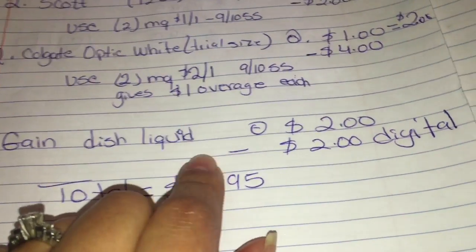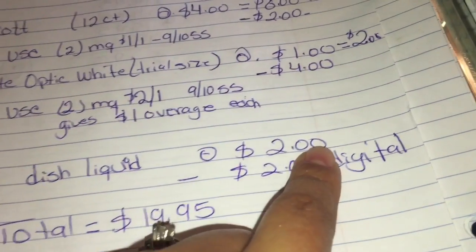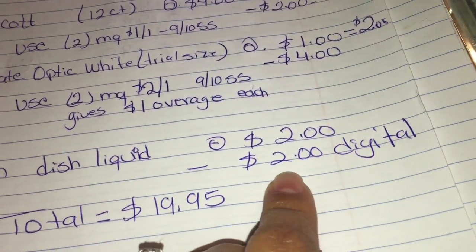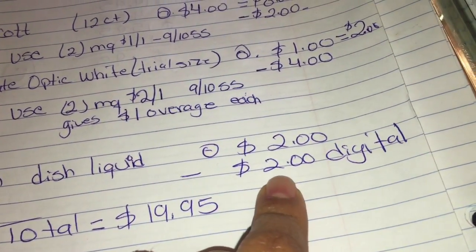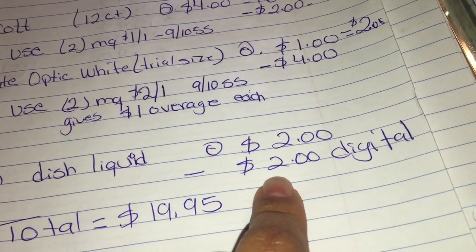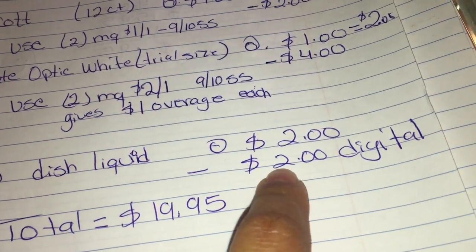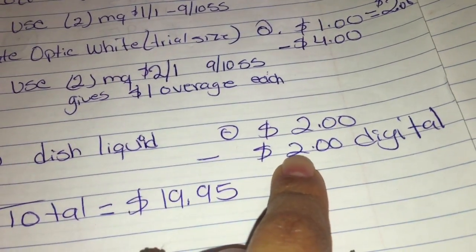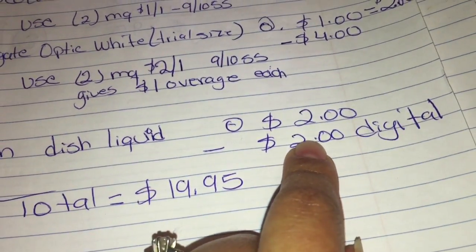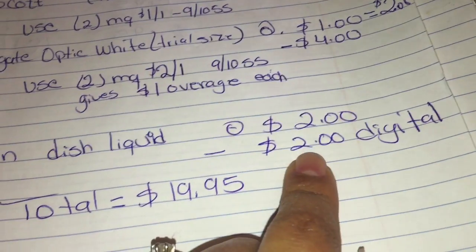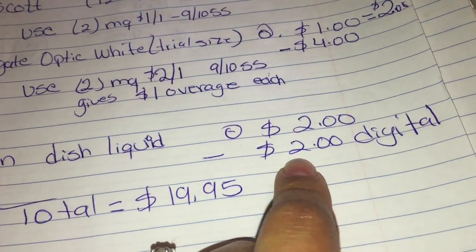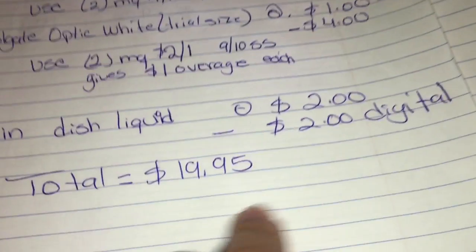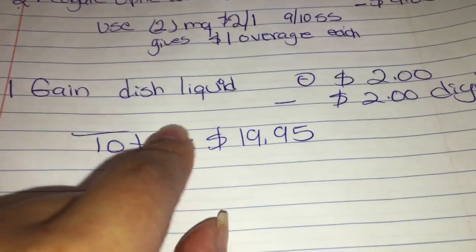Then you want to get one of the Gain dish liquid, which is two dollars. We're going to use a digital coupon for two dollars. The coupon you want attaching to your account is the two-dollars-off Gain detergent — I adjusted it and it did work.